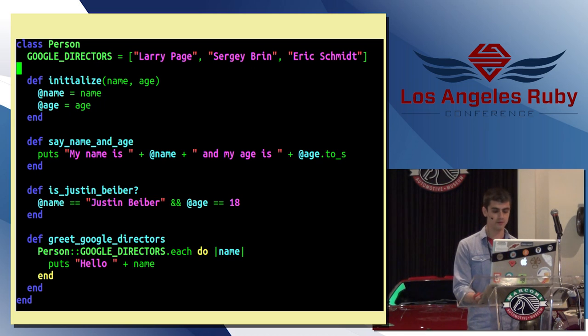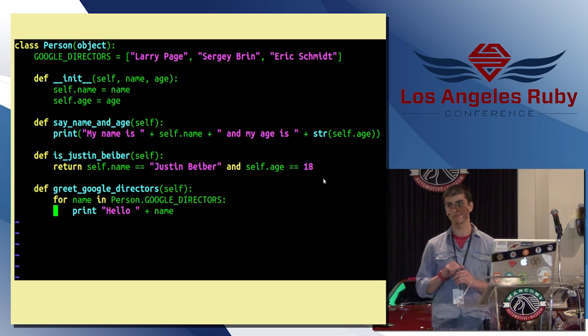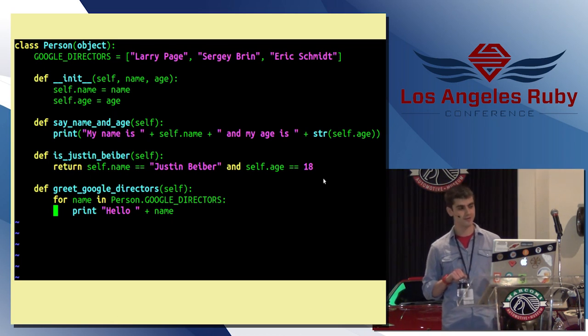Now, let's look at this in Python. Okay. So, you have a person object. Again, you create this Google directors constant scoped within the class at the beginning. You have an initialize function where you set the name and the age. And again, you have these same instance methods. You can see in greeting Google directors the loop syntax a little different. You're doing this for name in. But again, it's pretty easy to follow.